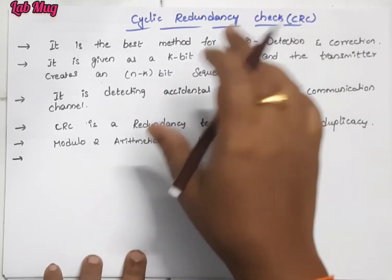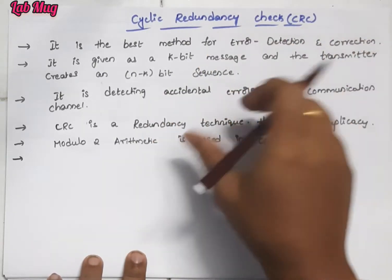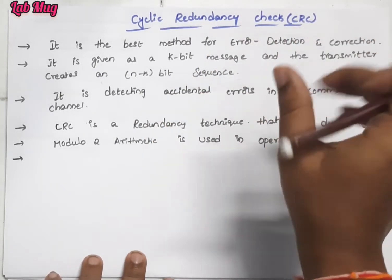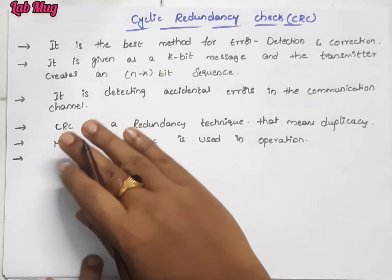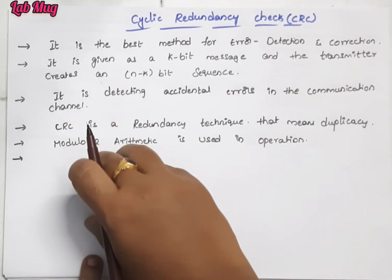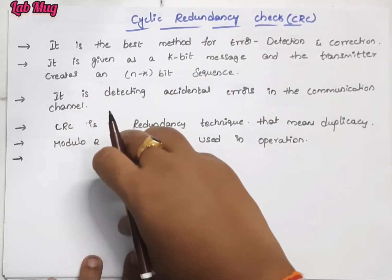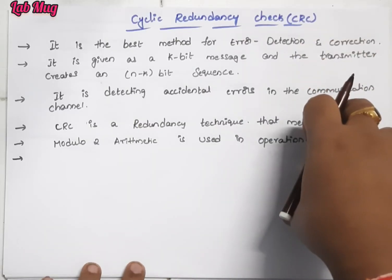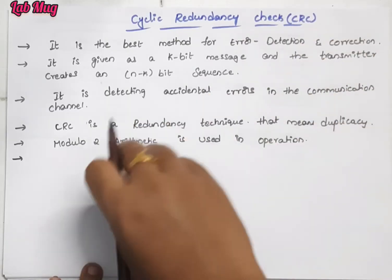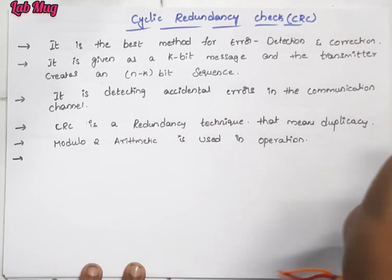For the Cyclic Redundancy Checker, first of all we will look at the main method. We will perform on the sender side and the receiver side. Both sender and receiver sides will work together.